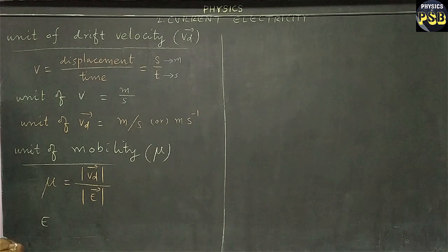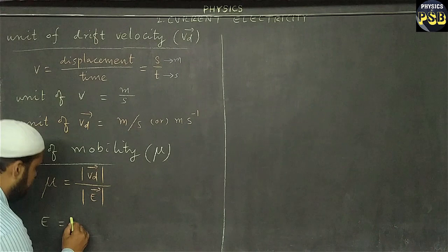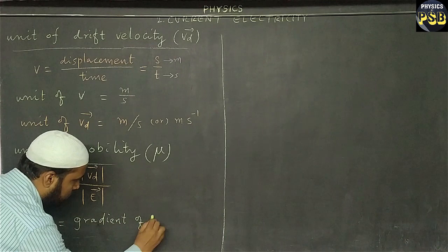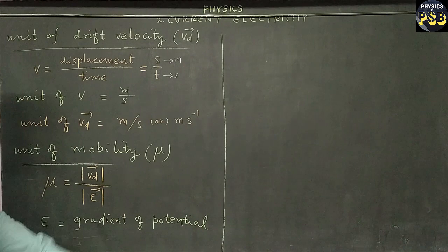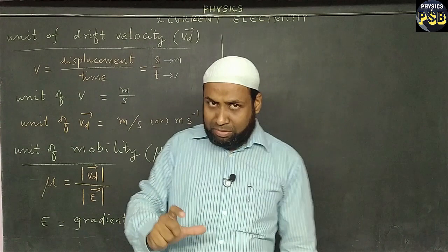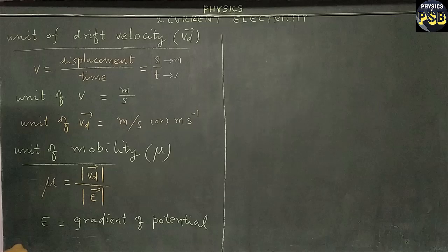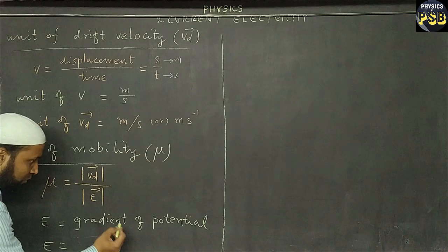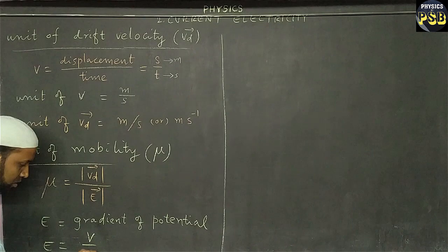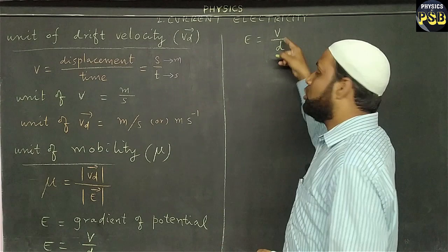To find the unit of mobility, we need the unit of electric field. We know electric field is the negative gradient of electric potential. When we say gradient, that means we divide a quantity by distance. So electric field means we divide electric potential by distance.